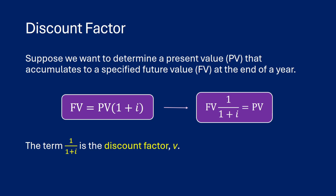If we want to determine a present value, and we have a future value, an interest rate, and some time, we have formulas that will tell us what the present value should be. The future value is just the present value times one plus your interest rate — in other words, it's increasing. If we do some manipulation on the formula, we end up with the present value being the future value divided by one plus i, or in other words, multiplied by one over one plus i.